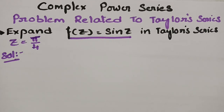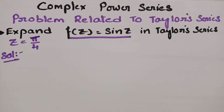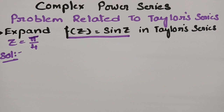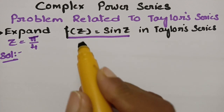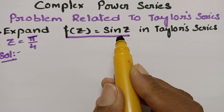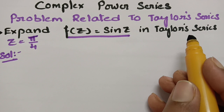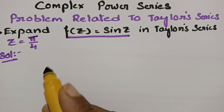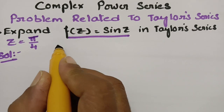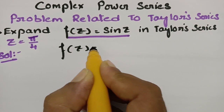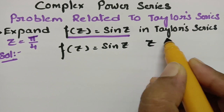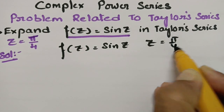This video is on the problem related to Taylor series, and this topic is from complex analysis. We are going to expand f(z) = sin(z) in a Taylor series, given z₀ = π/4. So f(z) is equal to sin(z) and our z value is equal to π/4.